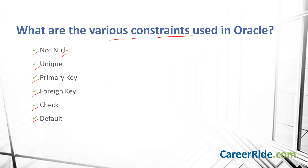NOT NULL ensures that a column cannot have a null value. UNIQUE ensures that all values in a column are different. A PRIMARY KEY is a combination of NOT NULL and UNIQUE — it uniquely identifies each row in a table. A FOREIGN KEY uniquely identifies a row in another table; a foreign key constraint requires values in one table to match values in another table. CHECK ensures all values in a column satisfy a specific condition. DEFAULT sets a default value for a column when no value is assigned.